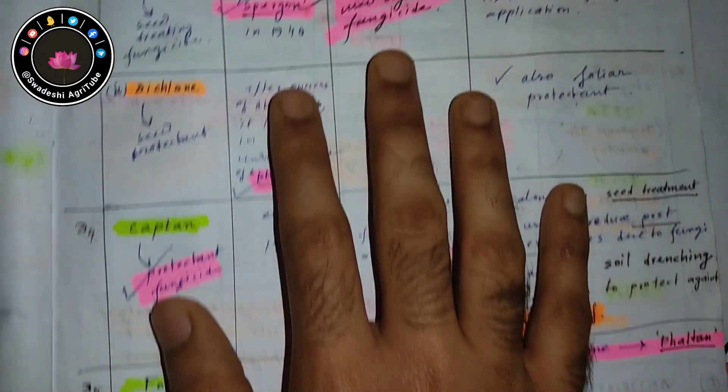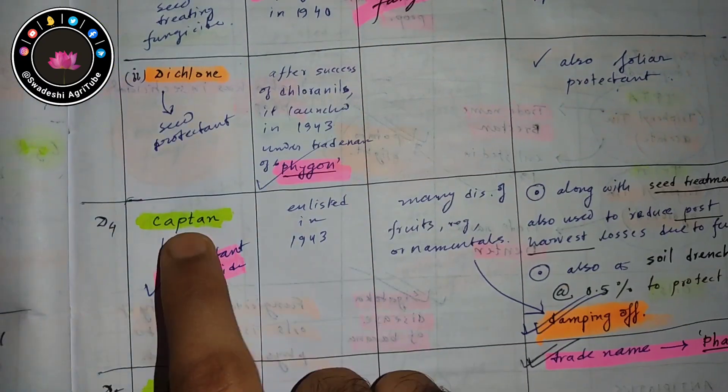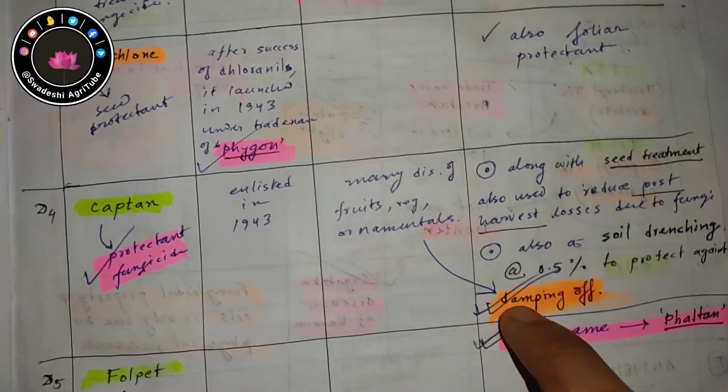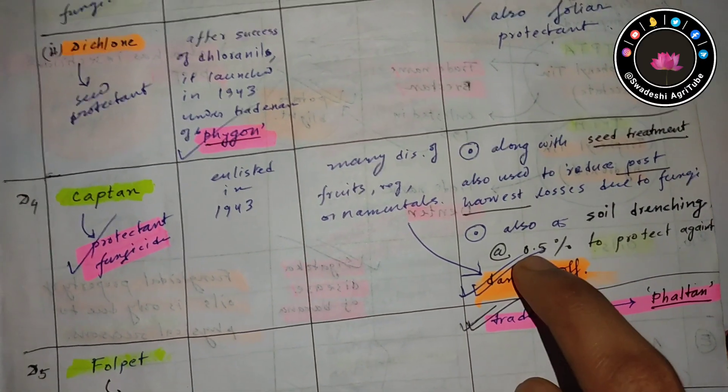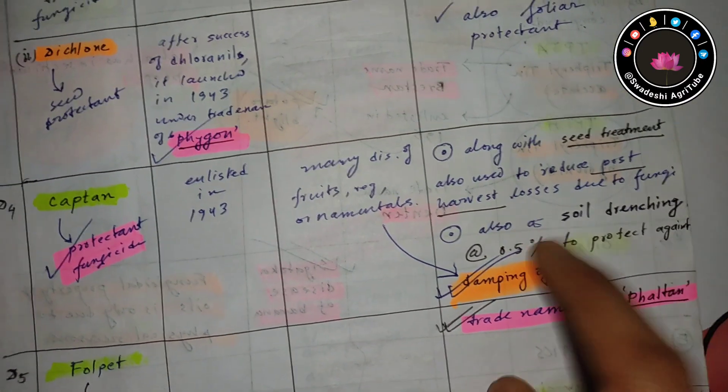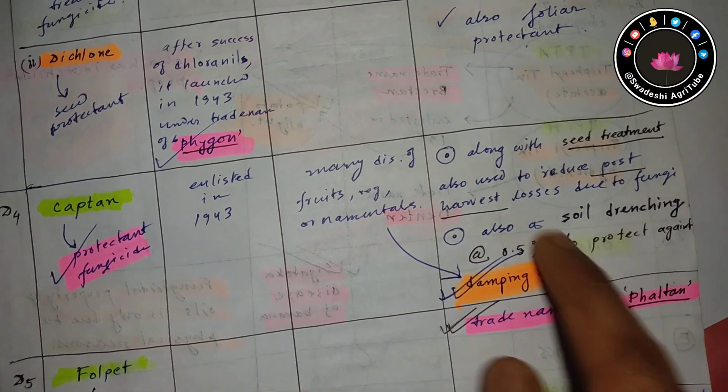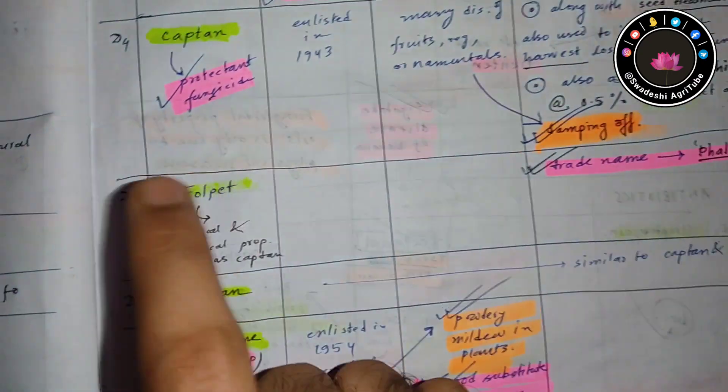The fourth one is captan. Captan is used as seed treatment, so it is a protectant fungicide. It can also be used to control damping off at the rate of 0.5 percent. This is one important point which we cannot easily memorize.